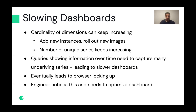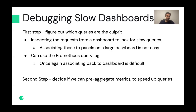What we see as users is that a dashboard which is really fast today, over the next few weeks just keeps getting slower. Eventually it leads to the browser getting locked up, and then when you actually want to use these dashboards, an engineer notices this and realizes the dashboard needs to be optimized. So how do you actually debug and approach this problem?